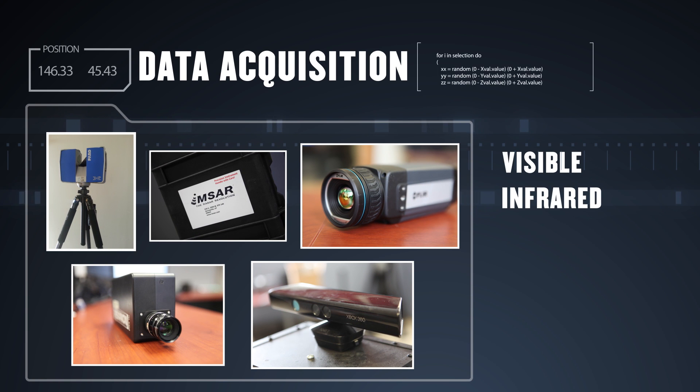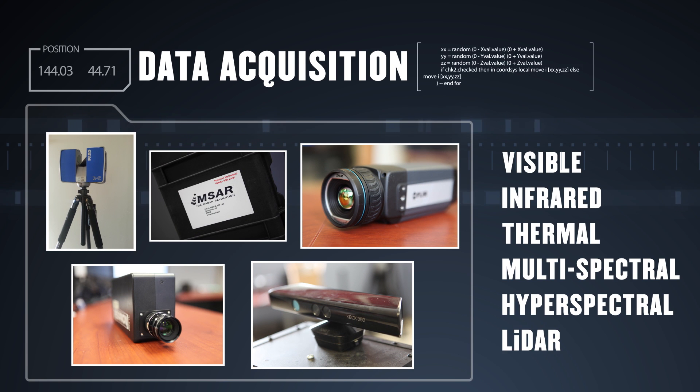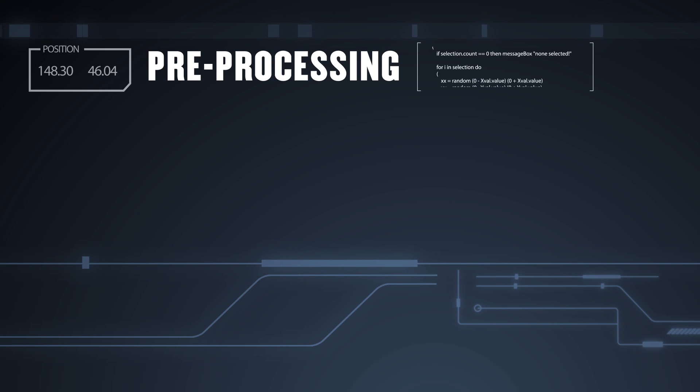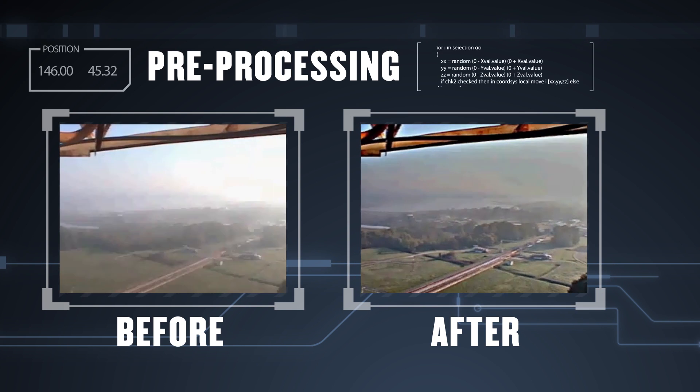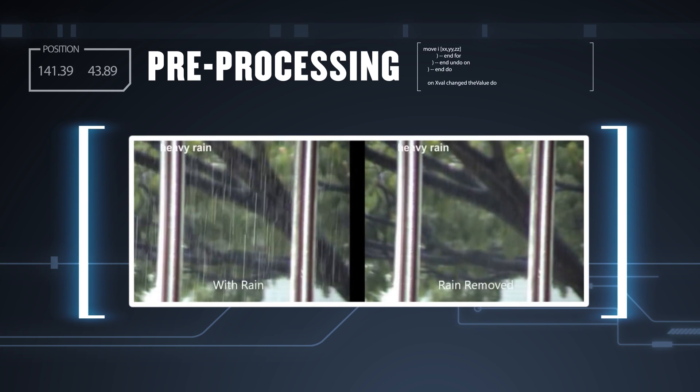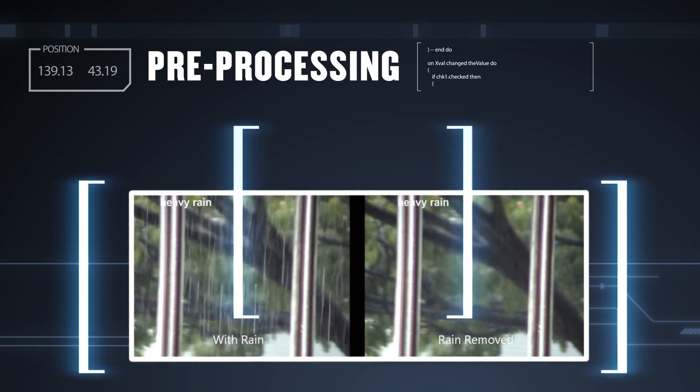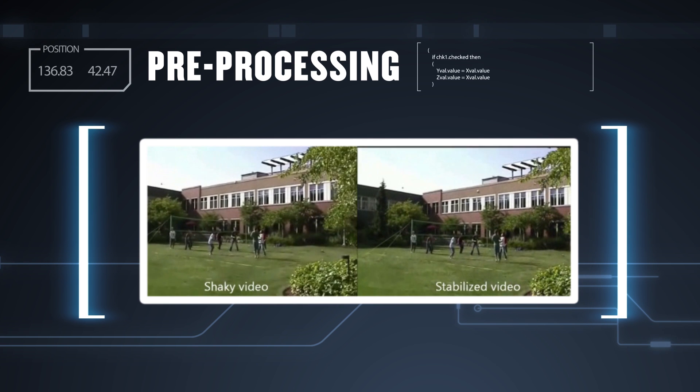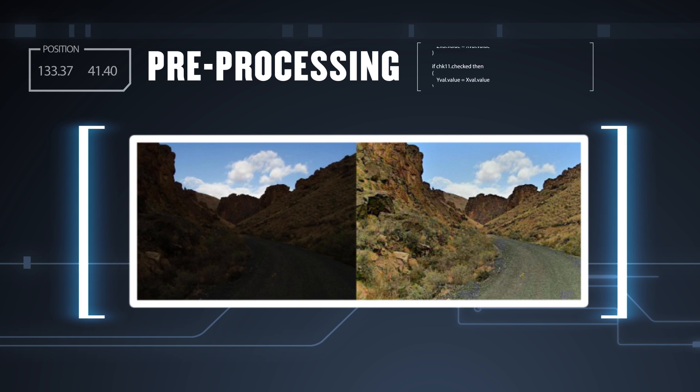Systems can use a variety of sensors to analyze a scene. We then pre-process that data to remove environmental distortions. For example, we developed algorithms to remove rain, to stabilize an image, or to improve exposure for better visibility.